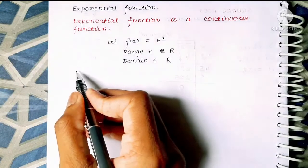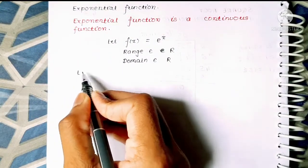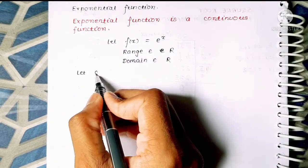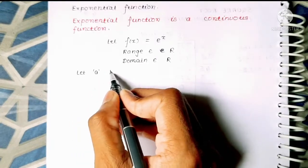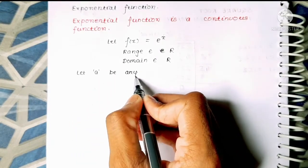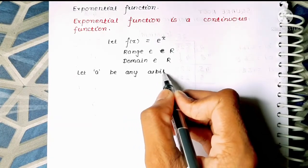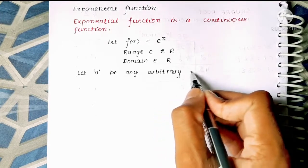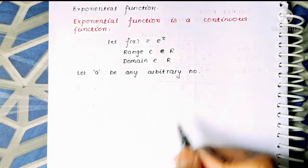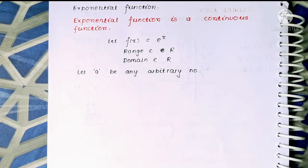So we know that f(x) is an exponential term, that is e to the power x, with range and domain both being all real numbers. What we will do is take an arbitrary number on the domain — let 'a' be any arbitrary number.